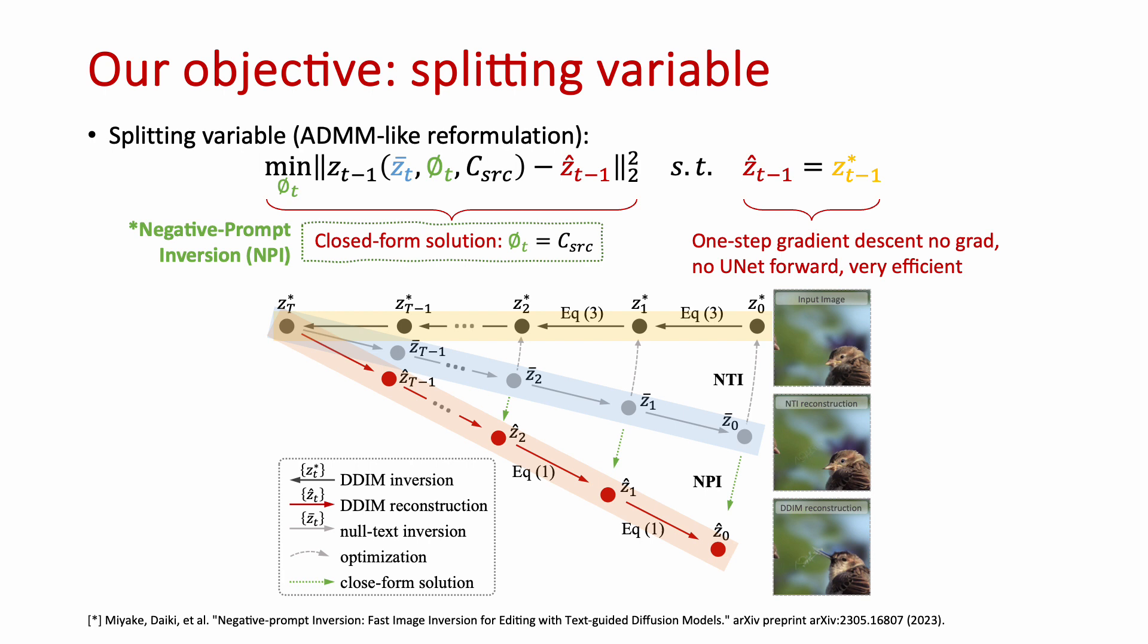The reason to do this is that it turns out such optimization without considering the constraint has an exact closed form solution, which says that the null embedding equals to the source prompt embedding. As for the constraint, we can simply perform one step of gradient descent, but without extra gradient computation or network forward, so it is very efficient.